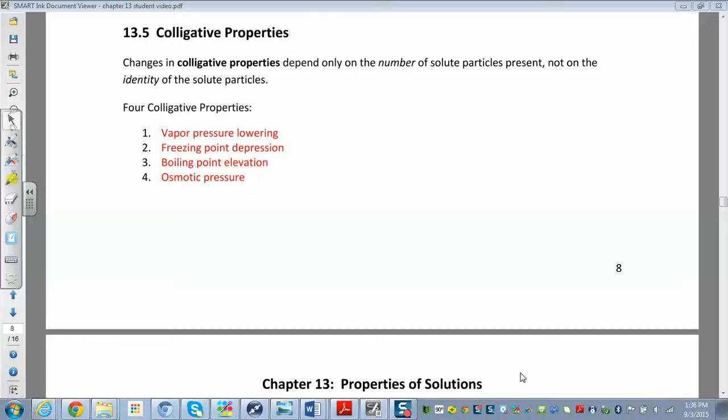So let's start talking about colligative properties. Colligative properties are properties that depend only on the number of the solute particles present, not necessarily the identity of the solute. This is a fancy word. All we're doing now is taking a pure solvent, like pure water, and we're adding something to it.